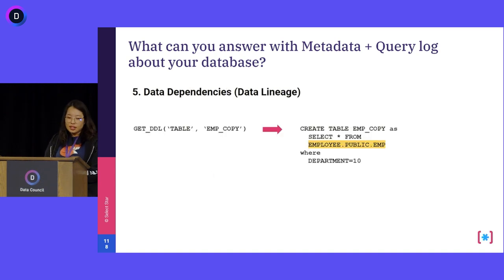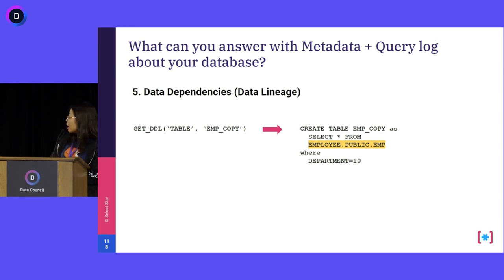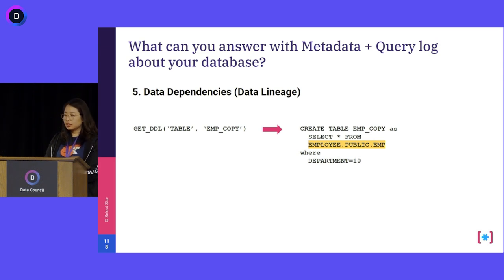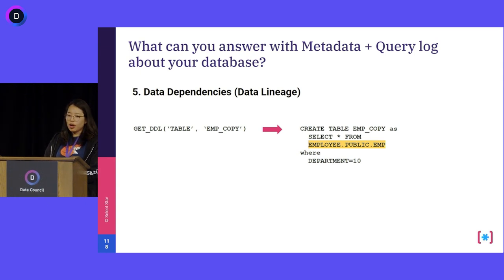The next part is data dependencies, or what we call data lineage. A lot of data warehouses provide functions to get the DDL — how a table was created. In Snowflake, there's a get DDL function that returns the actual create statement. At SelectStar, we parse through the SQL queries, map each column based on where it's coming from, and define how that column was generated. In this example, the data is coming directly from the AMP table — there's some filtering, but no aggregation or transformation.